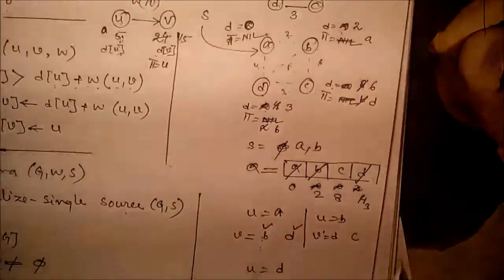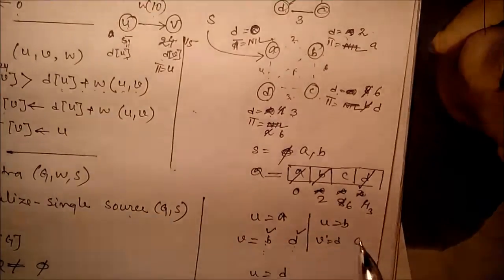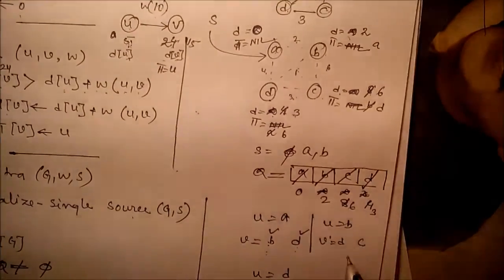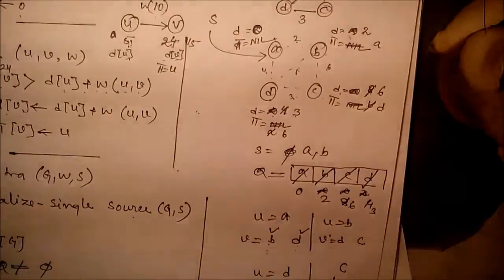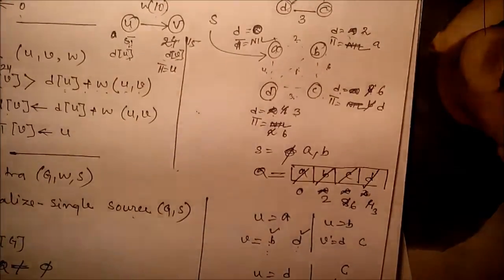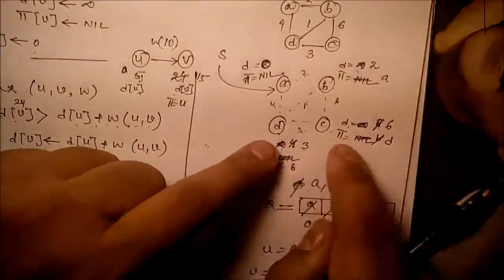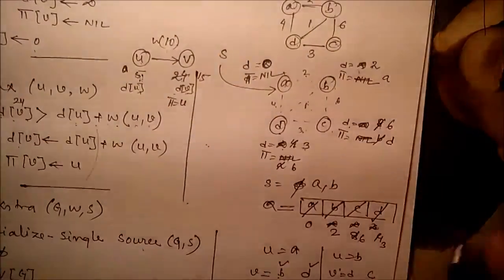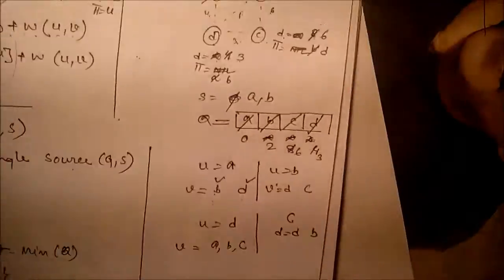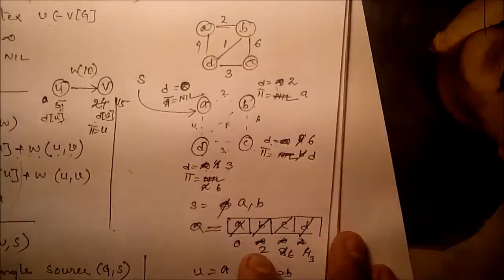Now d[c] = 6. Extract c. Adjacent of c are d and b. 6 + 3 = 9, no update needed; 6 + 6 = 12, no update needed. Q is now empty and the algorithm is over.